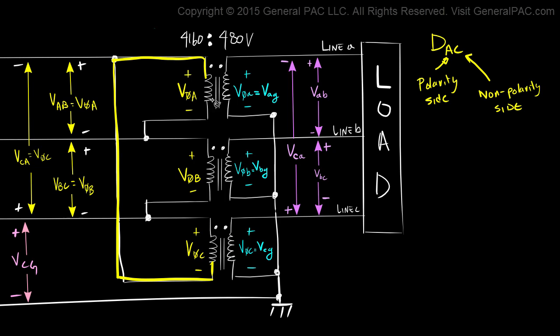the next pattern is that the polarity side of winding B, which is this side here, is connected to the non-polarity side of winding A. And the polarity side of winding C is connected to the non polarity side of winding B.